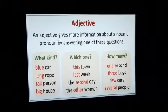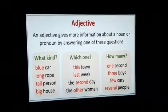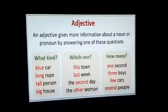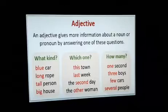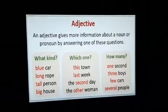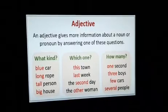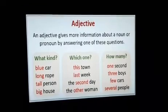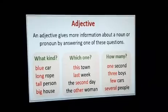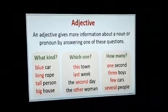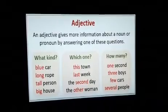Blue car, long car, tall or a big house — these answer 'What kind?' Blue is an adjective describing car. For 'Which one?' — this town, last week, the second day, the other woman. For 'How many?' — one, three, few, or several. These words describe more about the nouns.